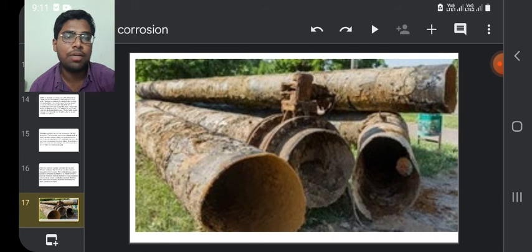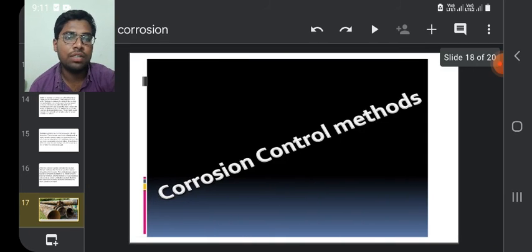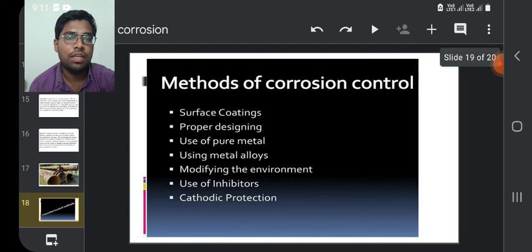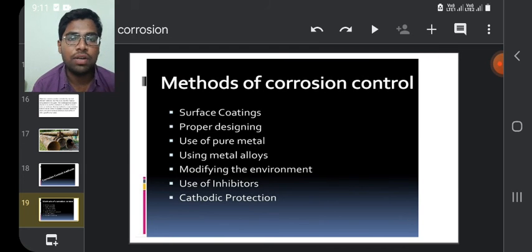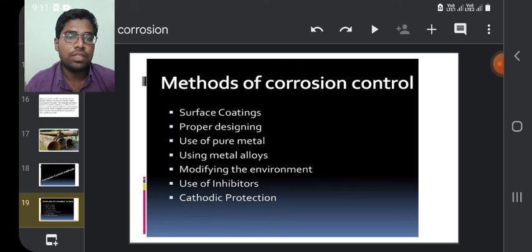Here are some underwater pipes which were corroded by waterline corrosion. Corrosion control methods. These are the most needed methods to prevent corrosion which may result in huge loss.